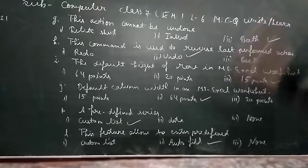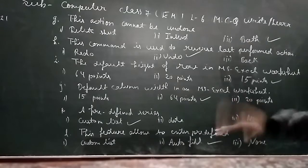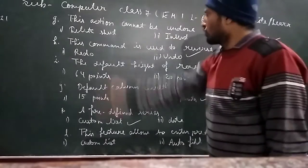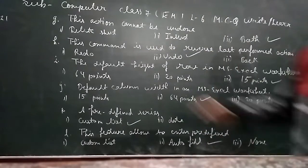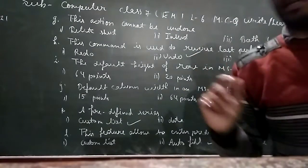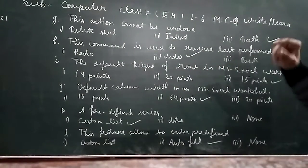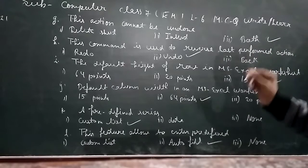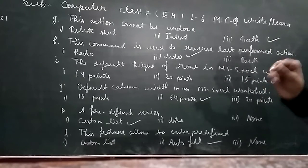Question number G: this action cannot be undone. That means we cannot do this action. That's what the goal is. We can delete sheet and insert, we can do it to go to the shape.